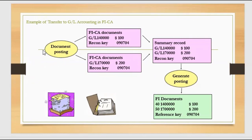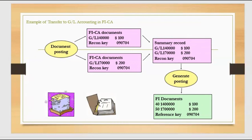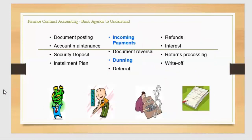From a broader perspective: the document posting starts with the FICA invoice being created and the document being posted. Once the FICA document is posted we have a reconciliation key. Both reconciliation keys are the same — whatever amount is posted on the same day or from the same desk is grouped under the same reconciliation key. This helps summarize the amount at end of day. Under a single reconciliation key we summarize everything, generate a posting document referencing that key, and it goes to the general ledger.